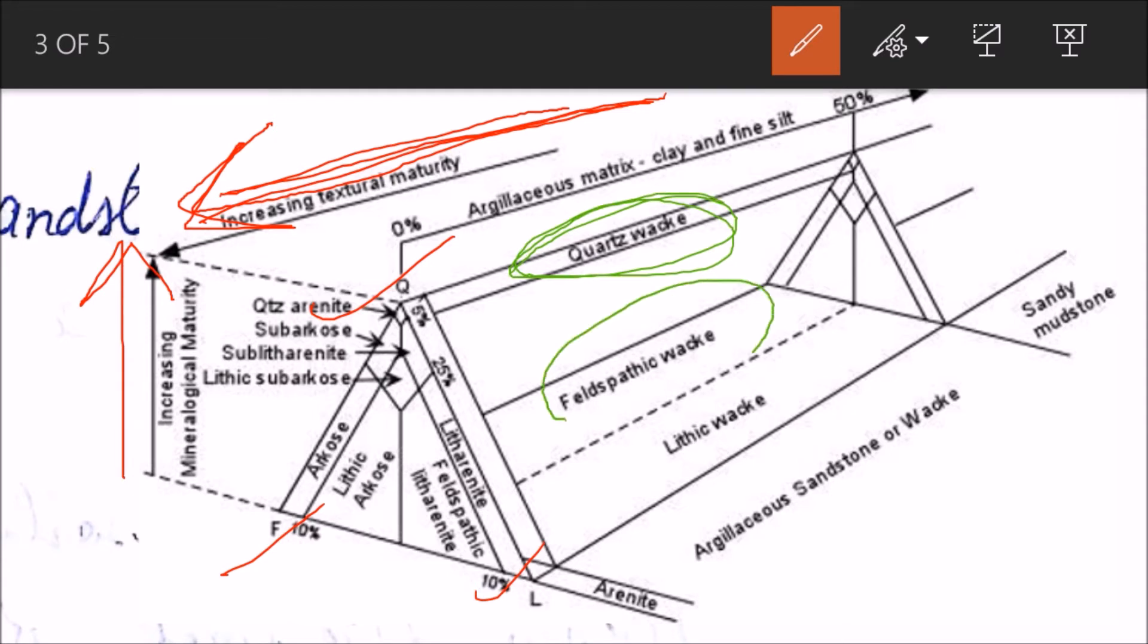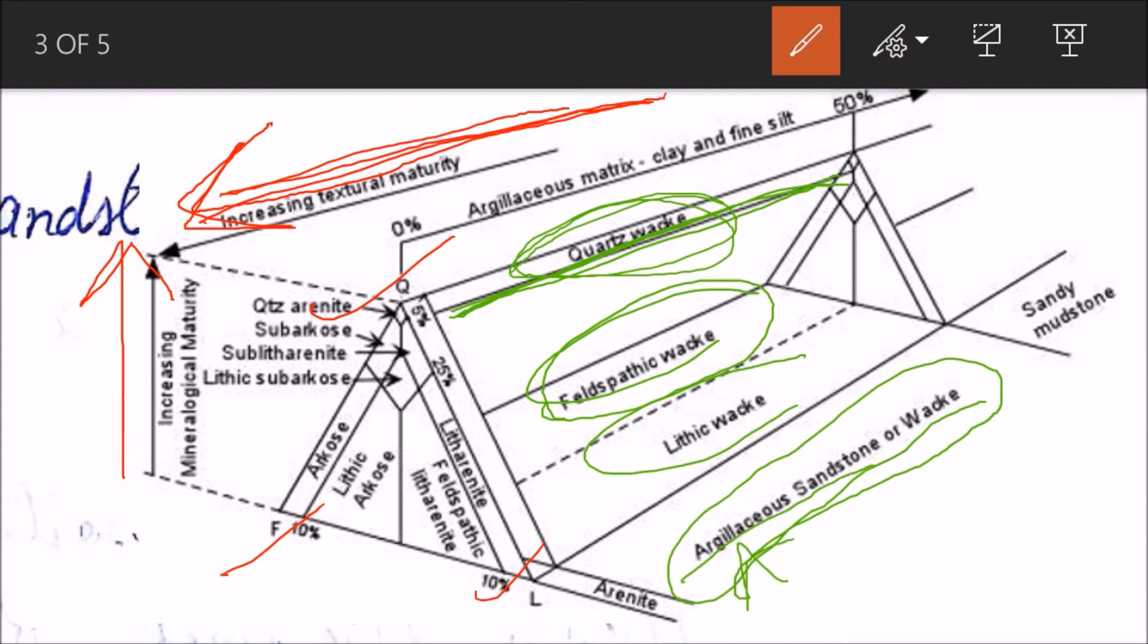The downward portion is called feldspathic wacke. So everything from here till here, from 10 percent to 50 percent is called wacke - feldspathic wacke in this region, lithic wacke, and the top portion is quartz wacke. Wacke is also called argillaceous sandstone.